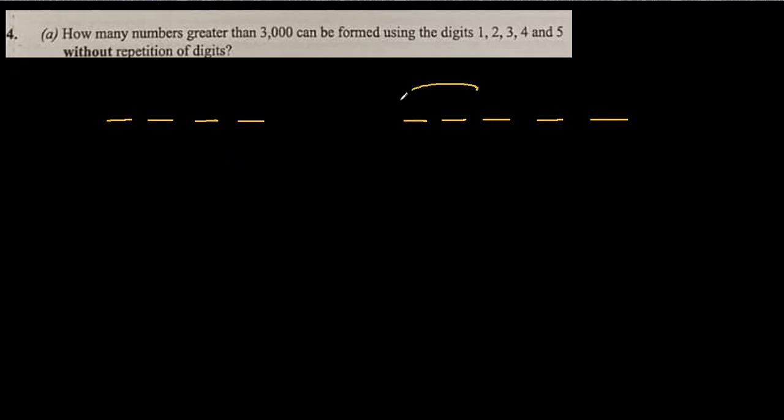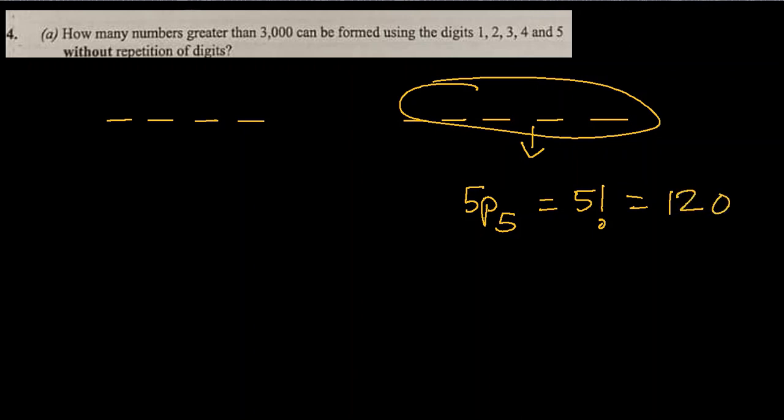All five-digit numbers will be greater than 3000, that's for sure. So let's see how many can be formed with five digits. We have five digits without repetition, which is 5 factorial, which is 120.